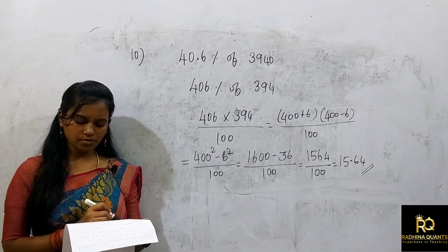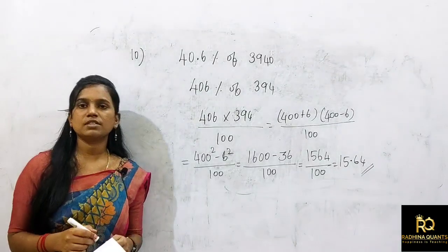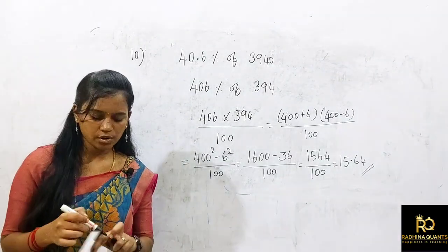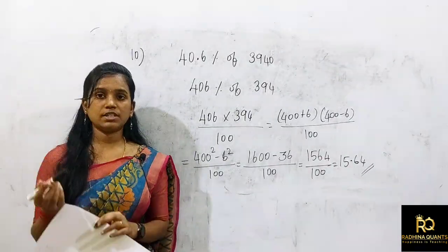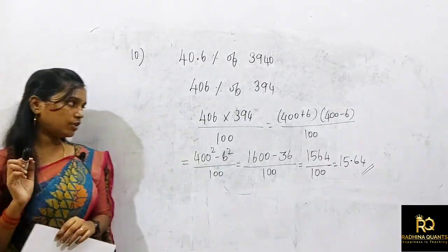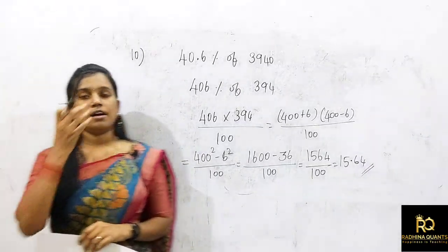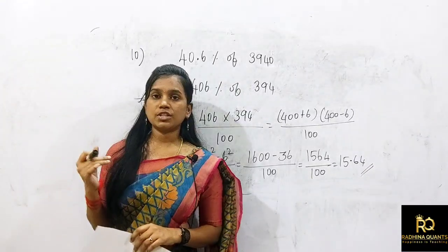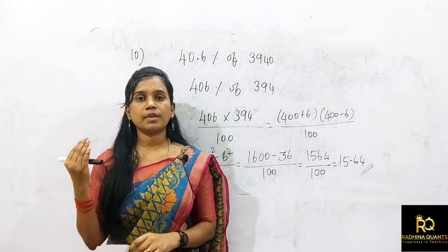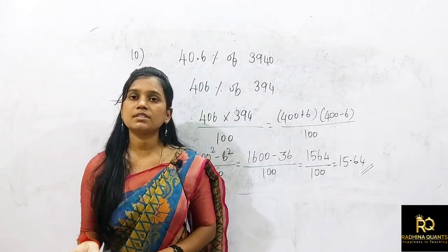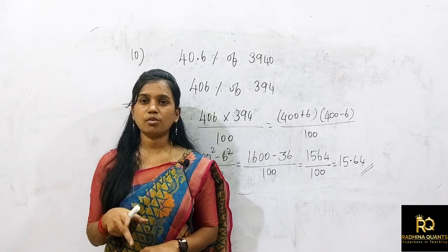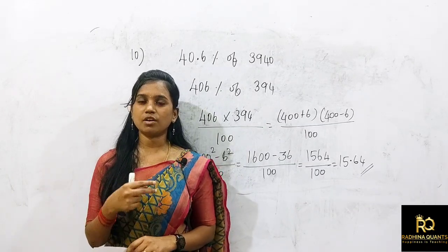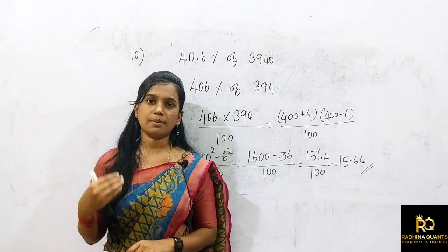So the last question answer is 15.64. Okay guys, in this video we covered 10 questions on percentage-based simplification. We have workout sums — post your answers in the comments.